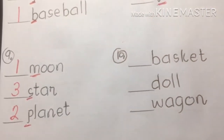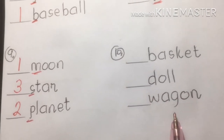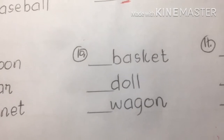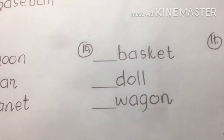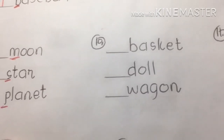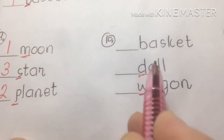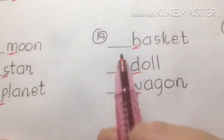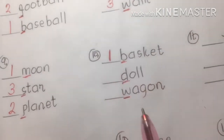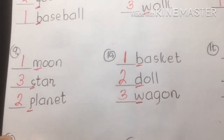Number ten: basket, doll, wagon. Basket starts with B — number one. Doll starts with D — number two. And wagon starts with W — number three. So: basket, doll, wagon.